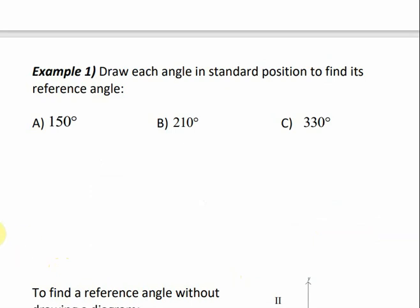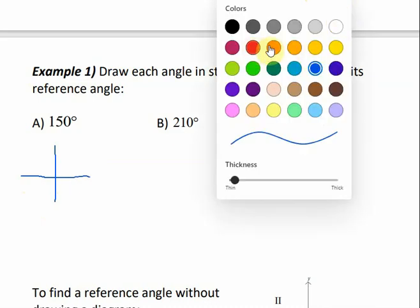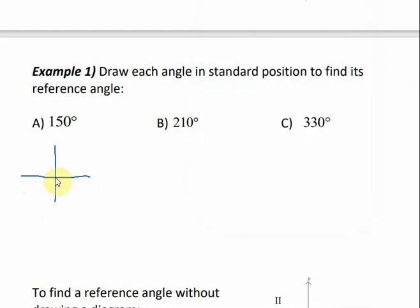In this example, we draw each angle in standard position to find its reference angle. For 150 degrees, this is our initial side. Since 90 degrees is here and 180 degrees is here, 150 degrees would be somewhere in the second quadrant. The reference angle is the angle that gets us back to the x-axis, which would be 30 degrees.